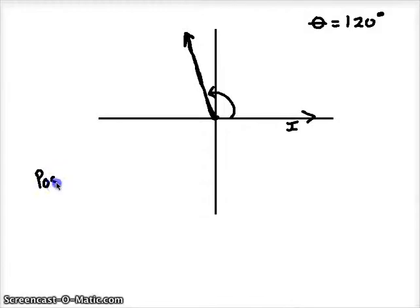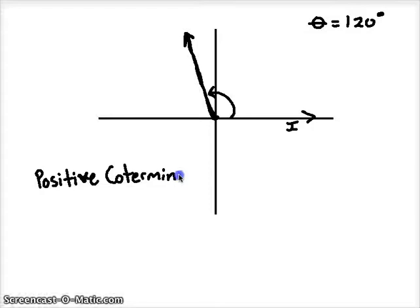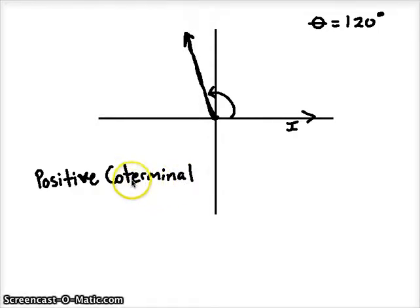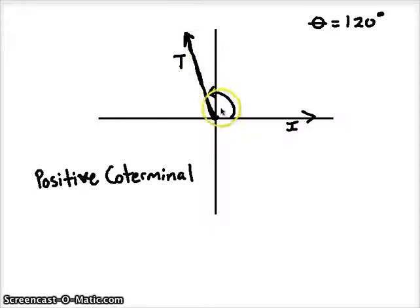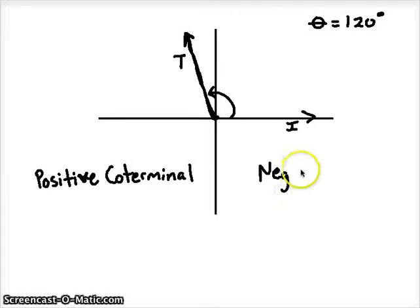Let's find the positive coterminal. One easy way to think about coterminals is by defining the name: 'co-' meaning together, 'terminal' meaning end. So as long as we have an angle that ends together at the same terminal side, it must be a coterminal. If we could draw another angle that starts at the same position and ends at the same position but is a different angle, that's a coterminal angle. It's probably obvious that if we just drew a negative angle, we could start at the same spot and end at the same spot — that would be our negative coterminal.